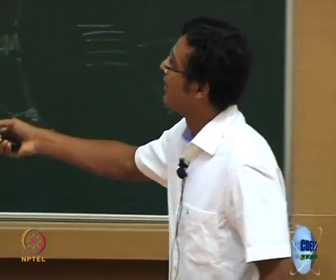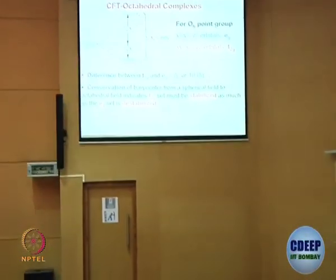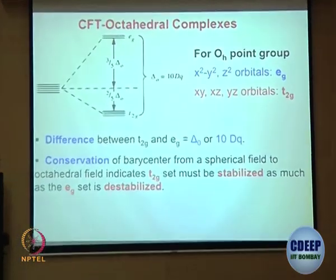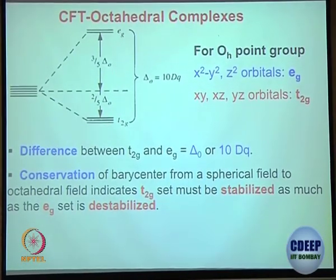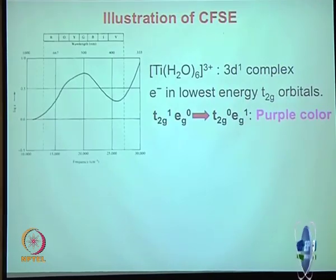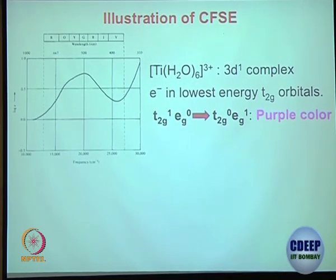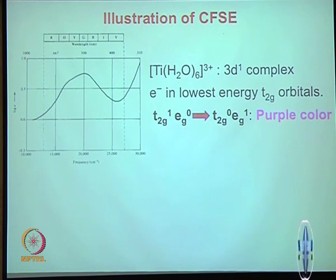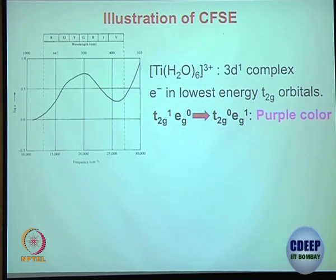Let us take a practical example: the titanium hexa-aqua complex with 3+ charge. Titanium is d2s2, and as Ti3+ it becomes 3d1. So no longer do we say it is 3d1 — we now say it is T2g¹ Eg⁰, because the filling up of electrons happens in the stabilized T2g level first. Electrons fill into the lower T2g orbitals before the higher Eg orbitals.